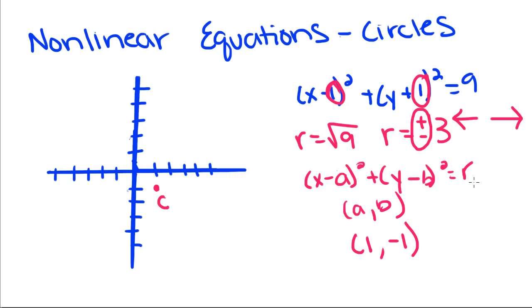So this is our center and our radius goes 3 in each direction. So up 3, left 3, and down 3. So there's our circle.